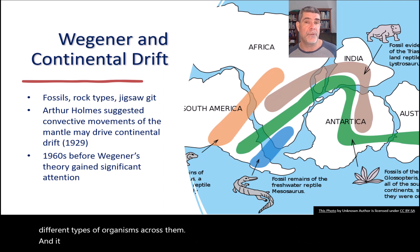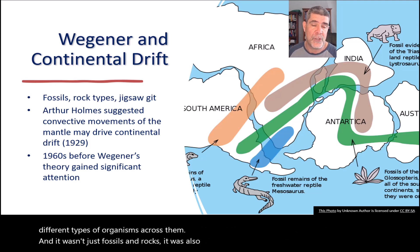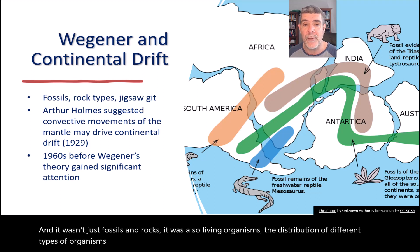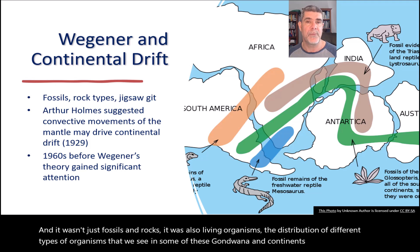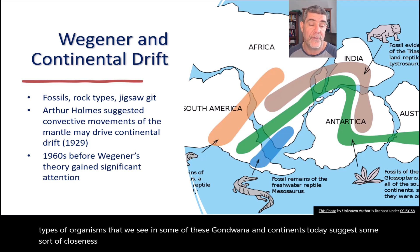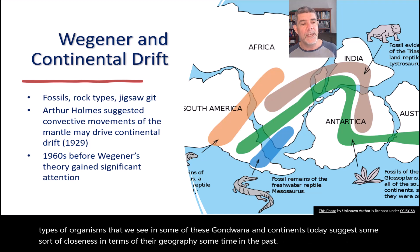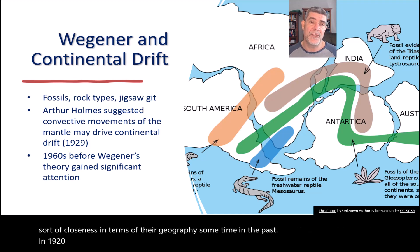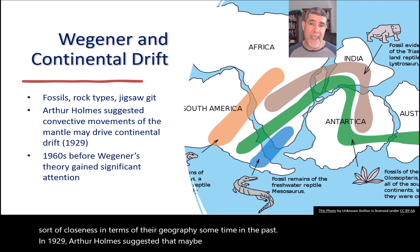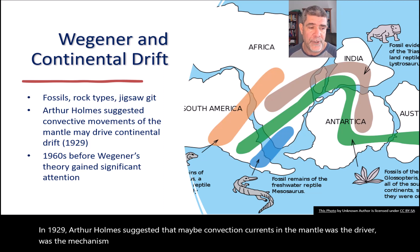And it wasn't just fossils and rocks — it was also living organisms. The distribution of different types of organisms that we see in some of these Gondwanan continents today suggest some sort of closeness in terms of their geography sometime in the past. In 1929, Arthur Holmes suggested that maybe convection currents in the mantle was the driver — the mechanism for continental drift.